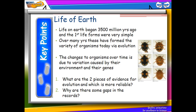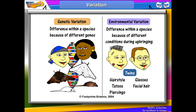The change to an organism over time is due to variation, and this can be caused by two things: the environment, and more specifically by the genes. If it is caused by the environment we refer to that as acquired, and if it is caused by the genes it can be inherited. Genetic variation can be things like tongue rolling, eye colour, skin colour, hair colour, or the example of the peppered moth.